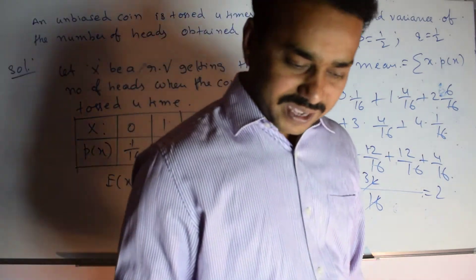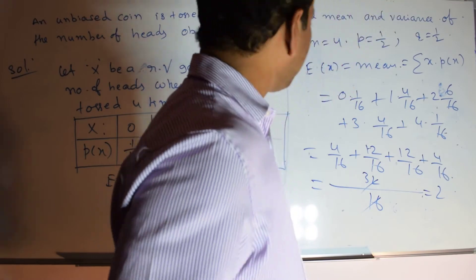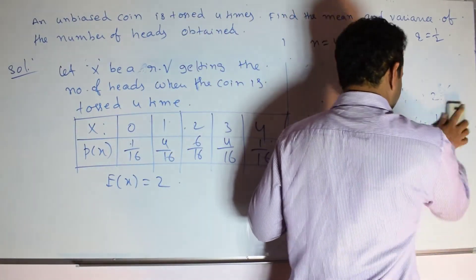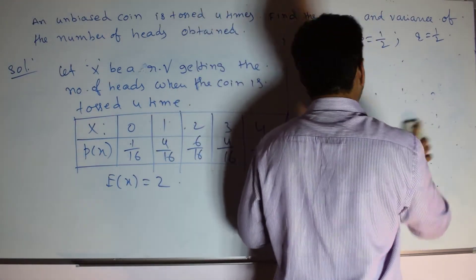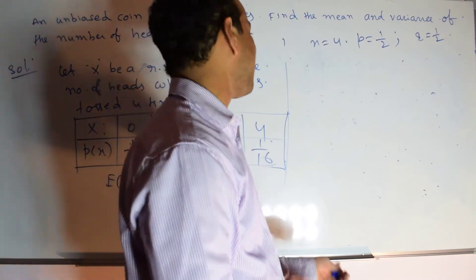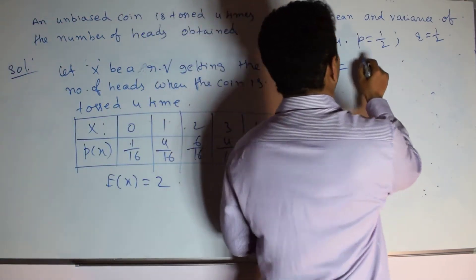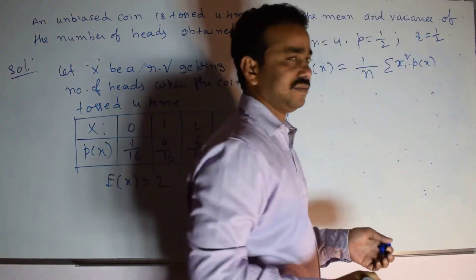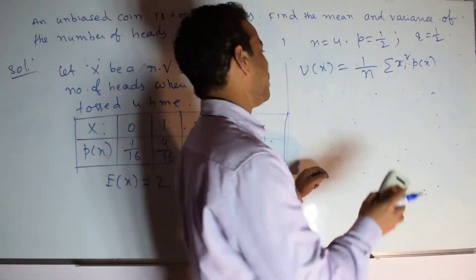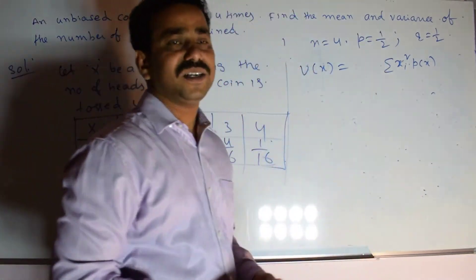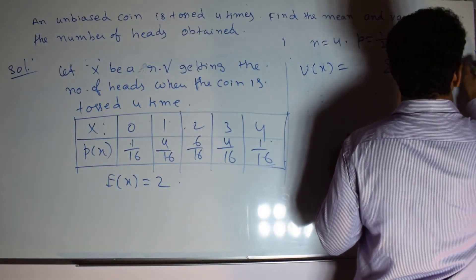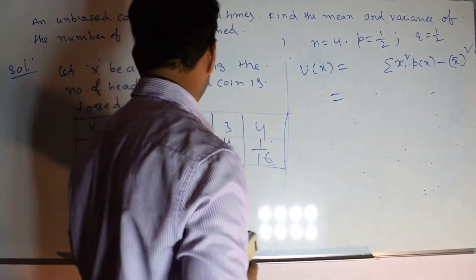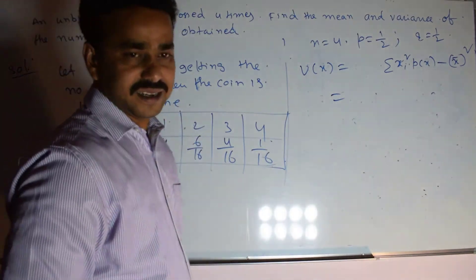Next we need to calculate the variance. There are two ways to calculate variance; let us use the easiest way to save time. Variance of x = summation of x_i² × P(x_i) − x̄². This is the formula for variance. Now let me square each x value: 0², 1², 2², 3², 4².